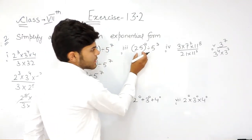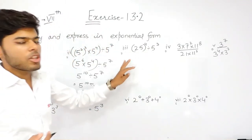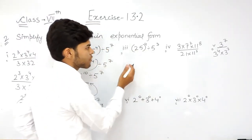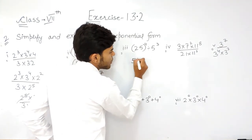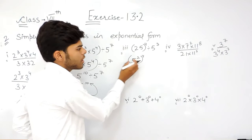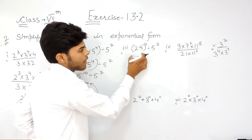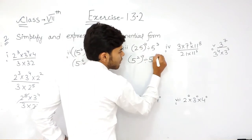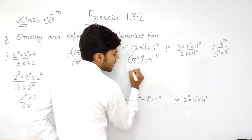Now, this can be written — I told you that we have to write it in the exponential form with prime factorization form also. So we can write this like 5 to the power 2, whole to the power 4. This means the same — you see, 5 to the power 2 is 25 and whole to the power 4, and here also it was 25 whole to the power 4 divided by 5 to the power 3. Now, this can be written as 5 to the power 8.